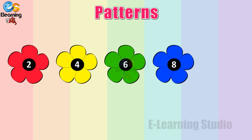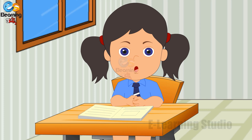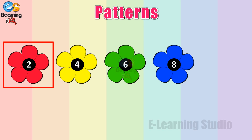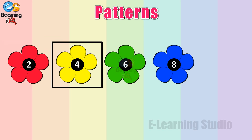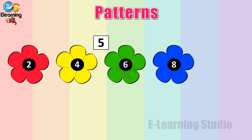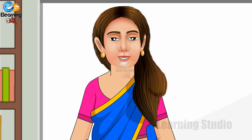Now, look at the number sequence appearing on the screen. Children, tell me, how many numbers are missing after every number? Madam, only one number is missing. 2 is there, then 3 is missing. 4 is there, 5 is missing, then 6 is given, 7 is missing, and 8 is there. Correct!